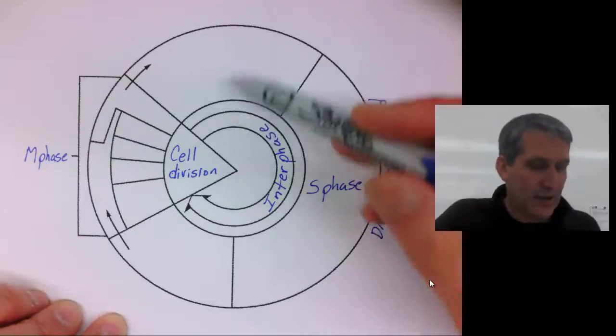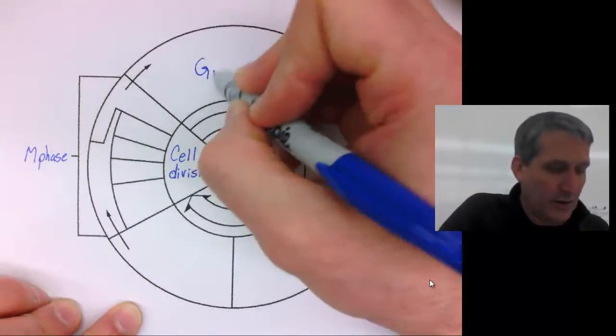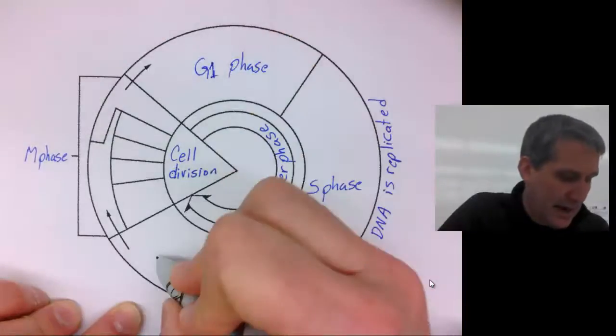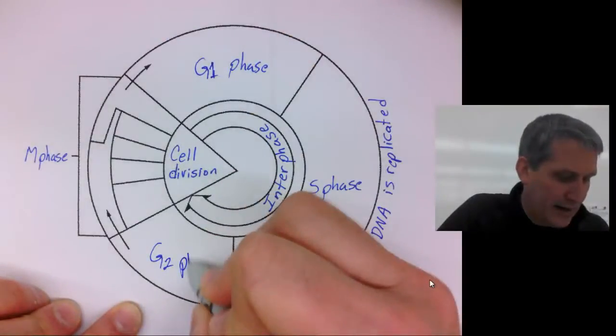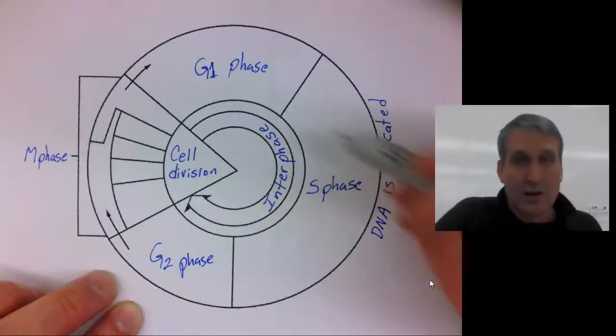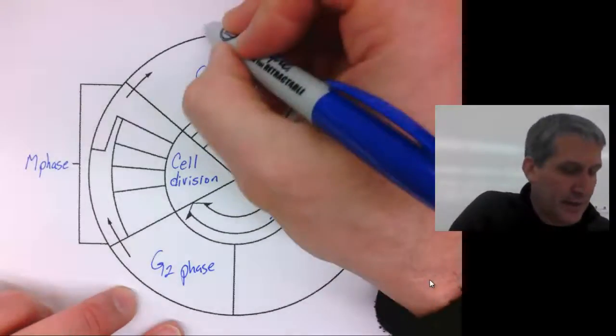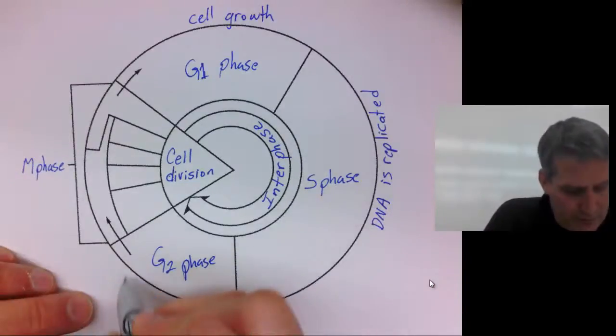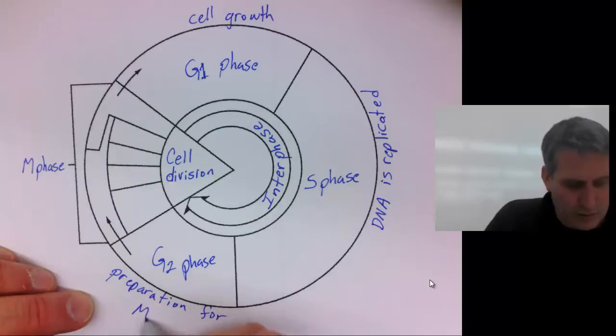Let's start with interphase. Interphase also includes G1 phase and G2 phase. During G1 phase, there's cell growth, and during G2 phase, there's preparation for mitosis.